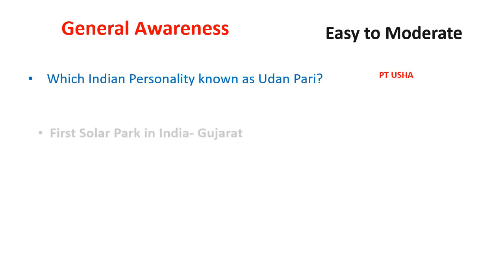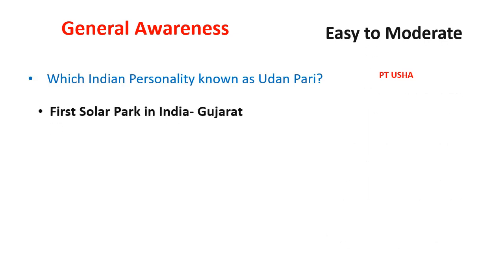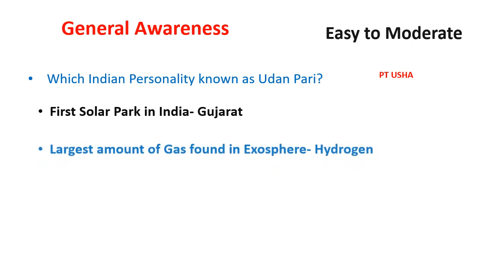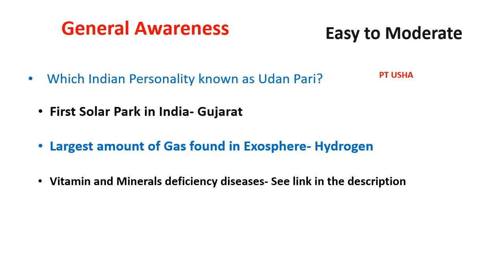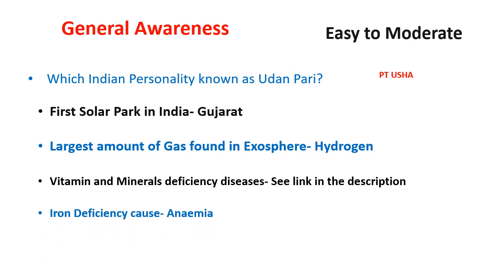Now let's start with the general awareness portion — the level was easy to moderate. First question: which Indian personality is known as 'Udhan Pari'? Answer: P.T. Usha. First solar park in India — India का first solar park कहां बनाया गया? Gujarat में. Largest gas found in exosphere — exosphere की सबसे ज़्यादा पाई जाने वाली gas कौन सी है? Hydrogen.